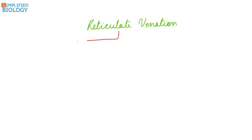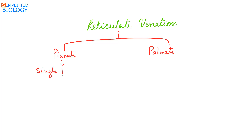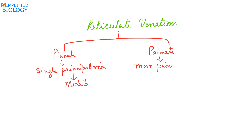Reticulate venation can be divided into two types: pinnate and palmate. In pinnate, there is a single principal vein or midrib from which develop the veins and veinlets that form a network throughout the lamina. While in palmate, there are more than one principal veins — the distinct main veins are more than one.